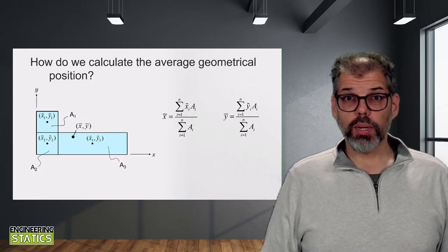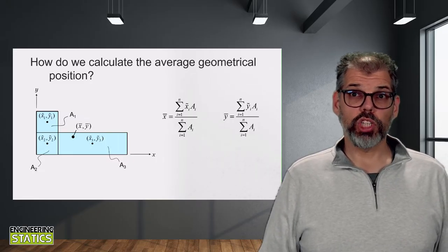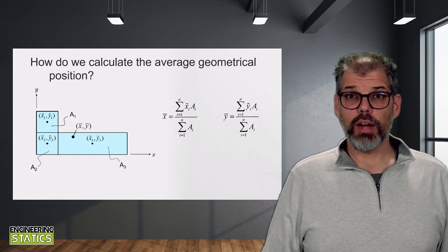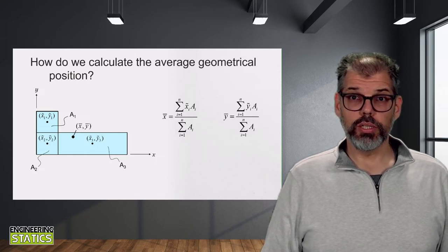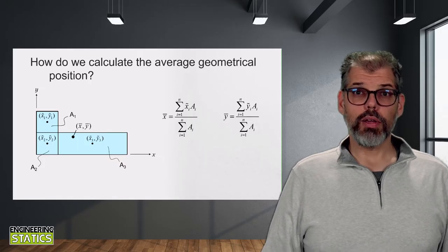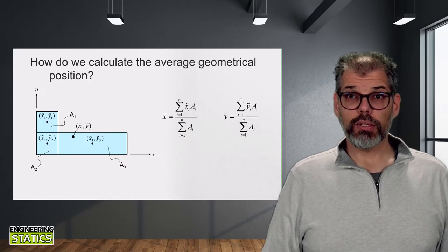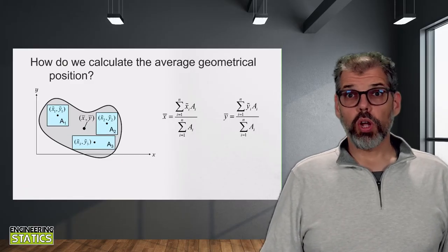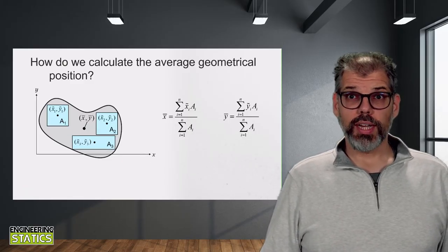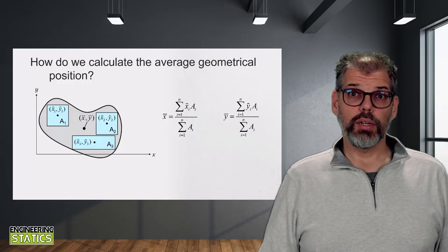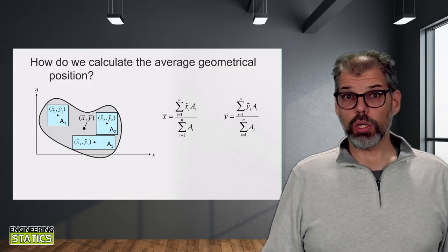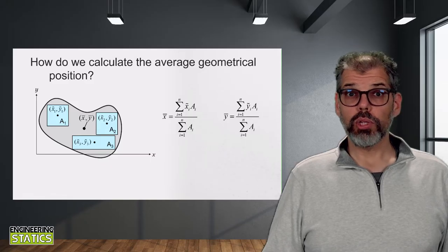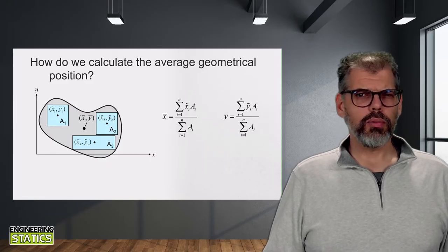This approach works, but we would like to make it more generalized. Here we had to break up the area into smaller areas with known centroid locations, but what if the area was something a little more organic looking? It is not really straightforward to fill this more complicated shape with squares and rectangles of a finite size. We may be able to get close and get an approximate value for the location of the centroid, but it will not be accurate. So how can we make this more accurate?